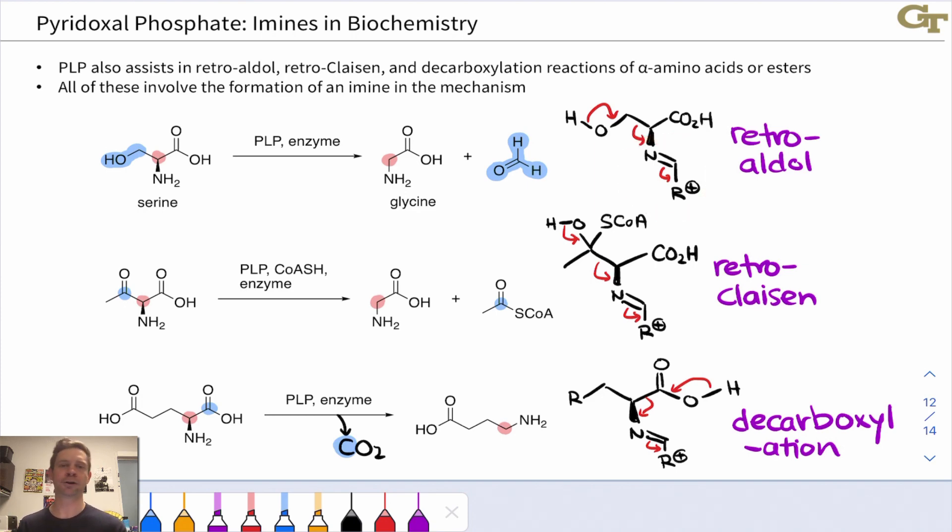It comes up again and again and again, and almost anywhere where you see PLP as a cofactor, this is something you should be thinking about. At the end of the day though, it just comes back to fundamental organic chemistry on some level. Formation of an imine creates a conjugated system connecting a positively charged group with an atom that sort of wants to or can accept electrons as a result of that connection. Fundamental organic chemistry guides biochemical reactions.